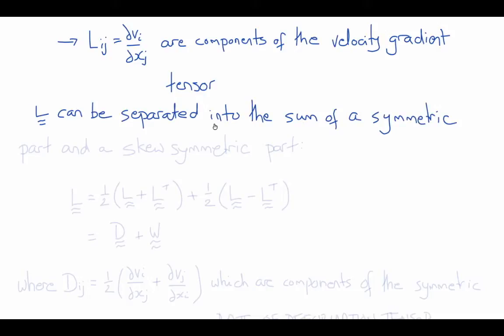So we decompose L into a symmetric part and a skew symmetric part as follows. L will equal a symmetric part, which is one-half of L plus L transpose, plus a skew symmetric part, one-half of L minus L transpose. And the symmetric part is called D, the rate of deformation tensor or the strain rate tensor. And the skew symmetric part is called W, the spin tensor.